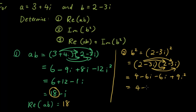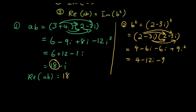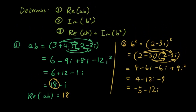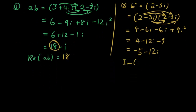So this becomes 4 minus 12i minus 9, because 9i squared — i squared is negative 1 — so 9 times negative 1 is negative 9. And then we have 4 minus 9 is negative 5 minus 12i. So once you have done that, we want the imaginary part of b squared. When they say the imaginary part, that means we only look at the number in front of i.